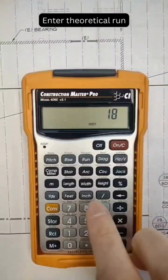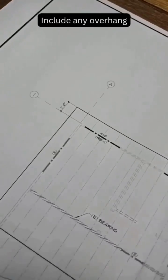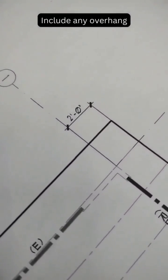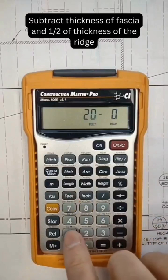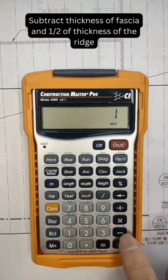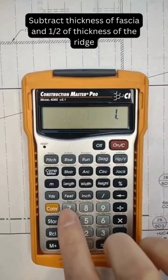Enter the theoretical run. Now add the overhang to the theoretical run, and then subtract the thickness of the fascia and half the thickness of the ridge.